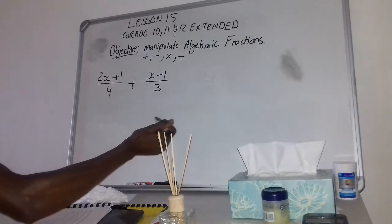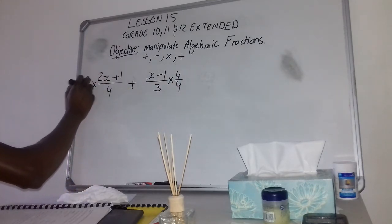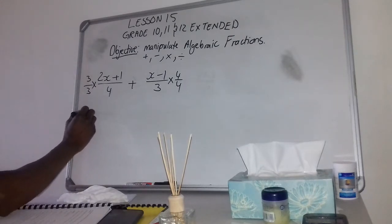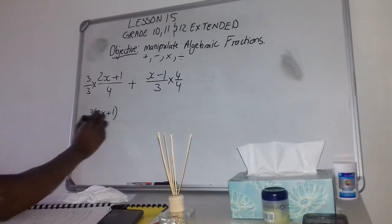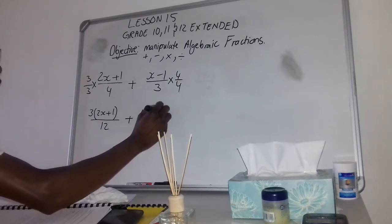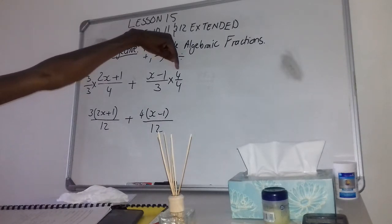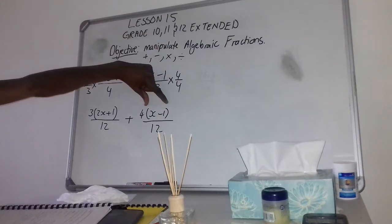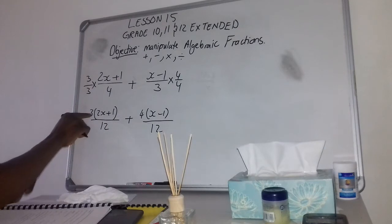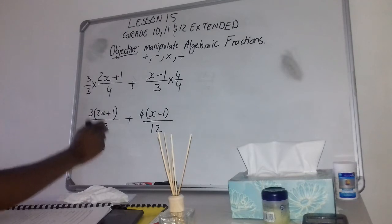We need to multiply the first fraction by 4/4 and the second by 3/3. That gives us: 3(2x + 1) over 12 plus 4(x - 1) over 12. Very important: when you are multiplying a whole number with an expression, put it in brackets. In the next step we remove the brackets: 3 times 2x gives 6x, and 3 times 1 gives 3.